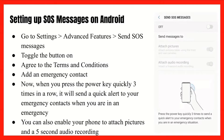Now that SOS Messages is enabled, if you press the power key on the right side of your phone quickly three times in a row, it will send a quick alert to your emergency contacts when you're in an emergency. You can also enable your phone to attach pictures and a five-second audio recording. On the right side of that picture, there are buttons to turn on 'attach pictures' and a button to attach an audio recording as well.